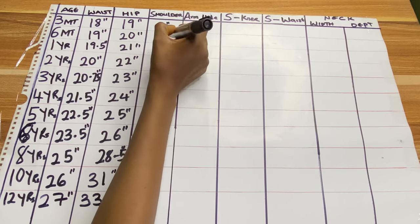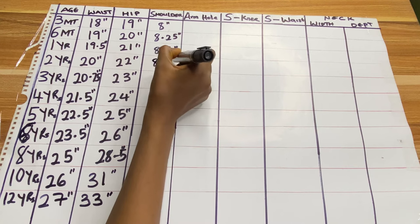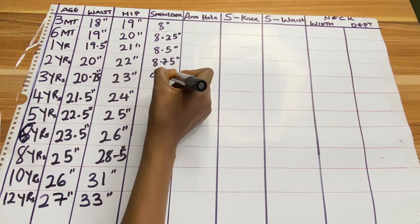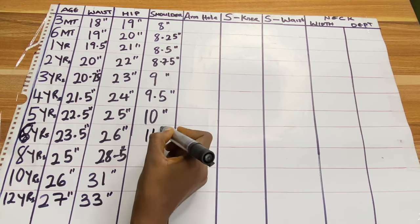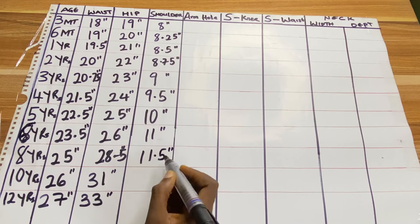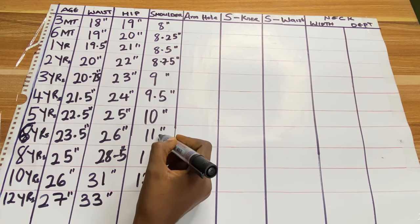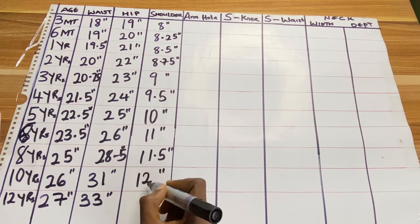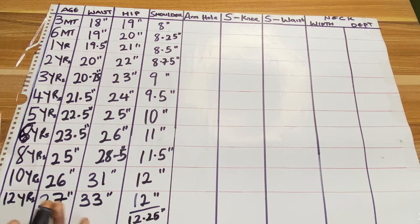The next measurement is shoulder. For three months 8 inches, six months 8.25 inches, 12 months 8.5 inches, two years 8.75 inches, three years 9 inches, four years 9.5 inches, five years 10 inches, six years 10.5 inches, eight years 11 inches, ten years 11.5 inches, and twelve years 12 inches. For ages beyond 12 years you can use 12.25 or 12.5 inches.